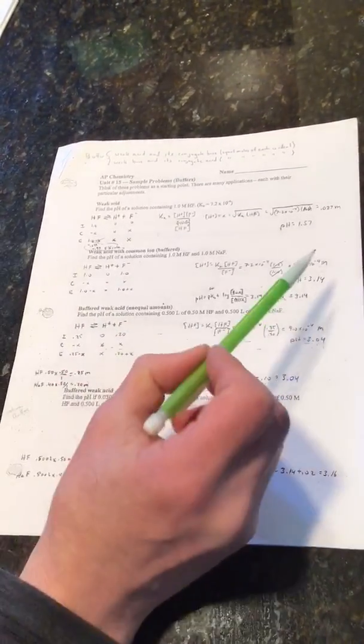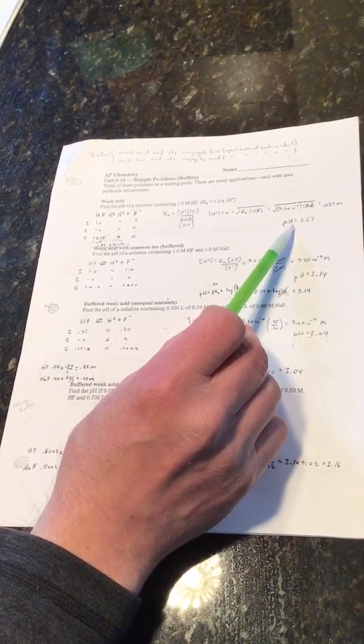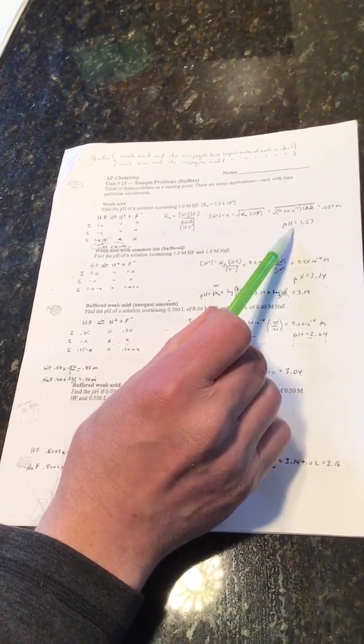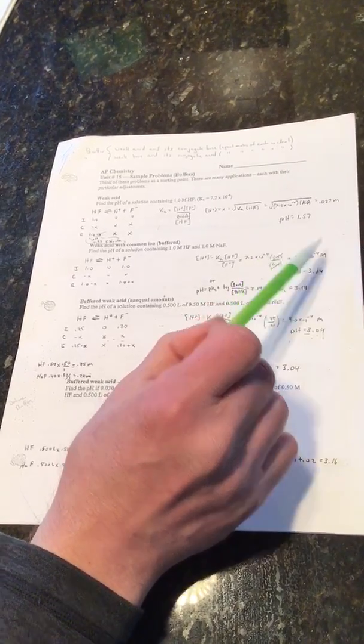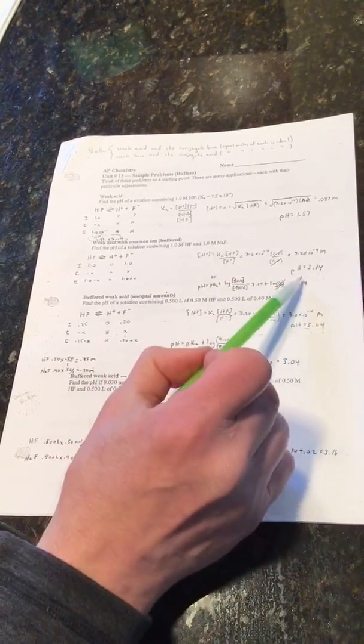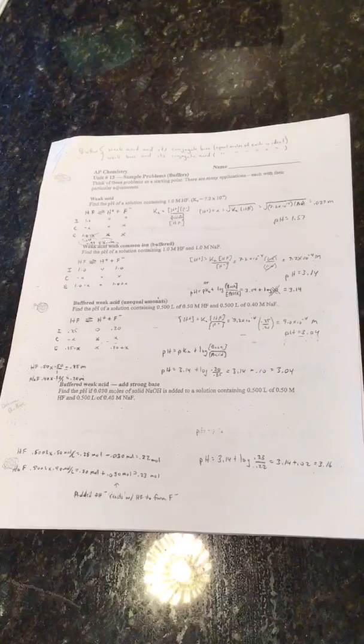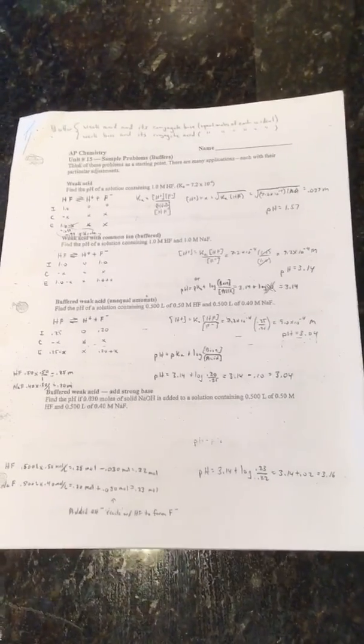How much less? Well, it looks like somewhere between 10 and 100 times less as it goes from a pH of 1.57 to 3.14. Less H+ means a higher pH.